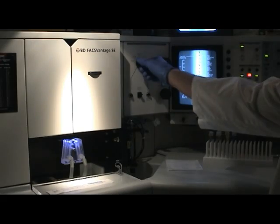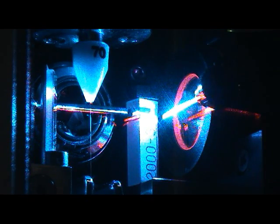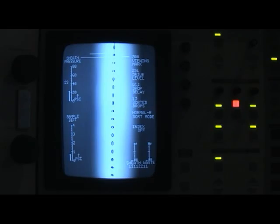With the cells moving along in single file, we're able to focus a laser beam on that stream, as well as additional lasers. This point is called the laser intercept. When a cell passes through the laser intercept, it blocks and scatters light.